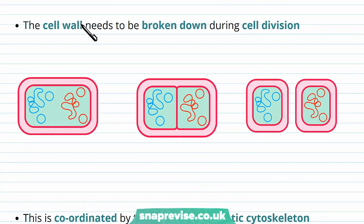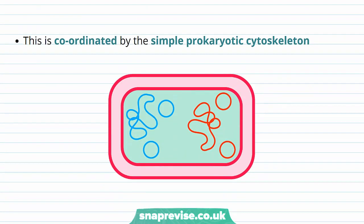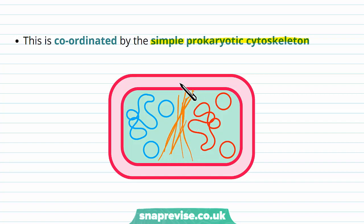The cell wall also has to be able to be broken down during cell division. In cell division, the bacterial genetic material copies itself, and we need to allow this to make two new daughter cells. In doing so, we need to split the cell wall down the middle, so it has to be able to break down. This is coordinated by the simple but still present prokaryotic cytoskeleton — a skeleton of the cell made up of multiple filaments and tubules — which helps break down the cell wall so that each cell becomes its own entity.